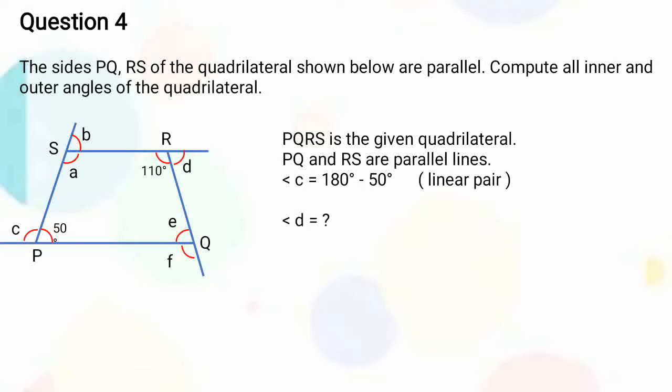What about angle D? It is also a linear pair, so it is equal to 180 degrees minus 110 degrees. That is equal to 70 degrees.